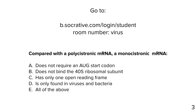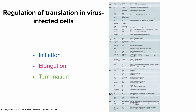Quiz question: compared with a polycistronic mRNA, a monocistronic mRNA does not require an AUG start codon, does not bind the 40S subunit, has only one open reading frame, is only found in viruses and bacteria, or all of the above? The answer is C—has only one open reading frame. It's the simplest and correct answer.